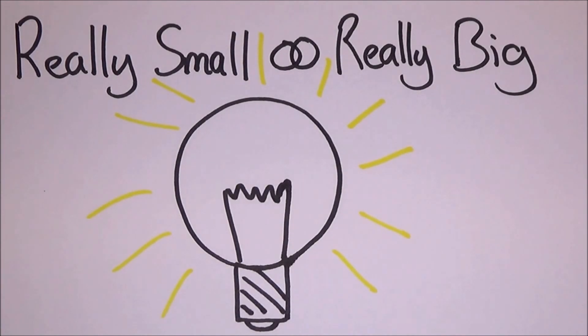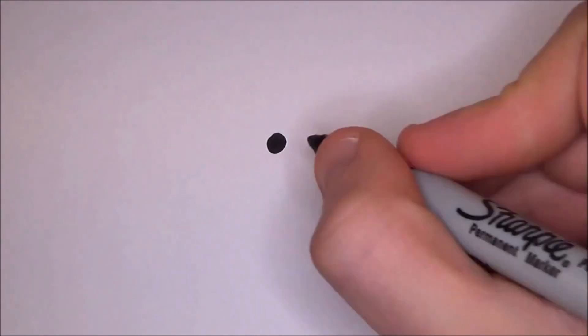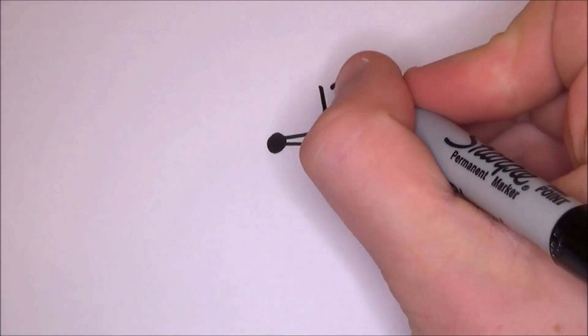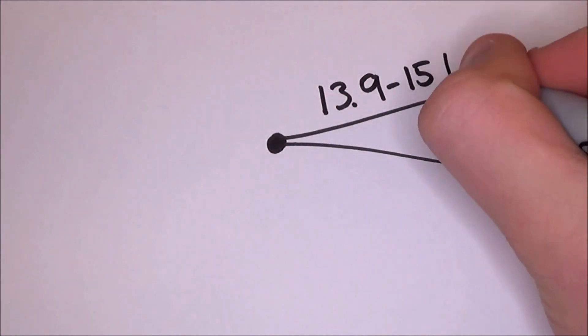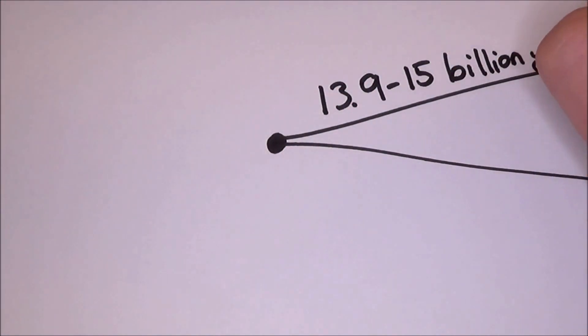Let's look at the universe for what it is. The observed universe is expanding, which looking back points to one idea, that at some point it was a lot smaller. It implies that the universe was born out of singularity some 13.9 to 15 billion years ago.